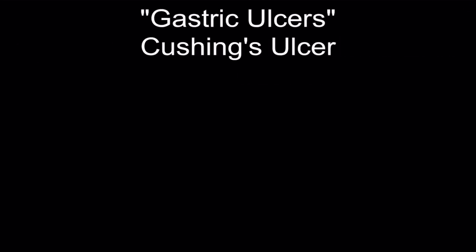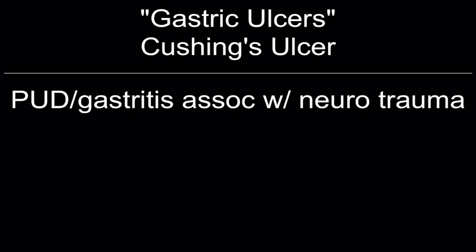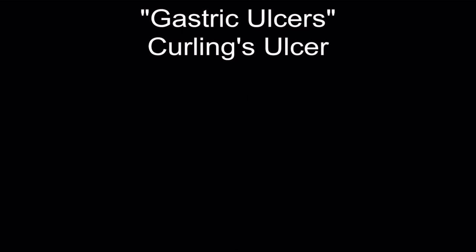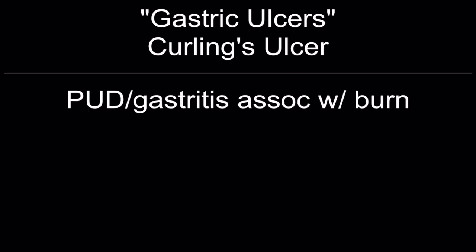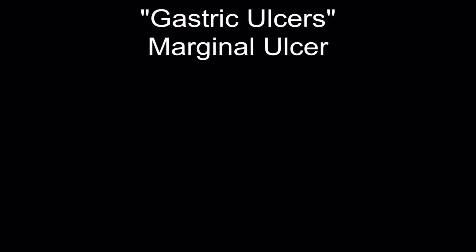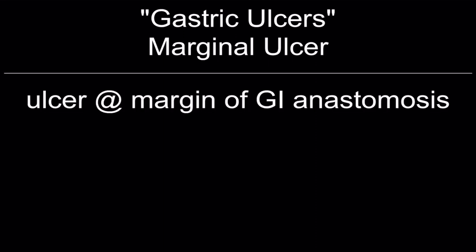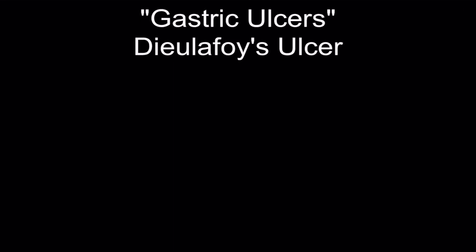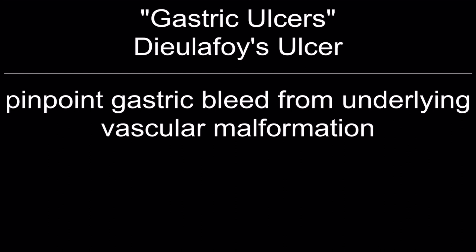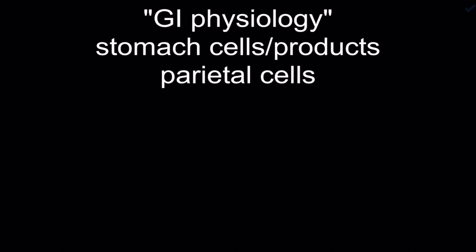Cushing's ulcer: peptic ulcer disease with gastritis associated with neurological trauma. Curling's ulcer: PUD gastritis associated with burns. Marginal ulcer: ulcer at the margin of a GI anastomosis. Dieulafoy's ulcer: pinpoint gastric bleed from underlying vascular malformation.